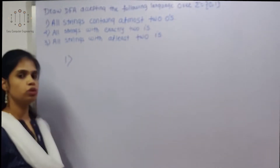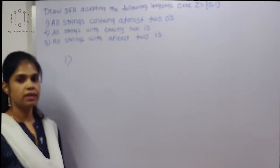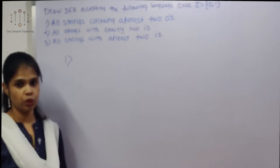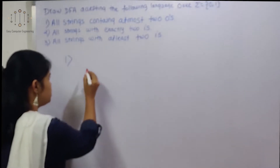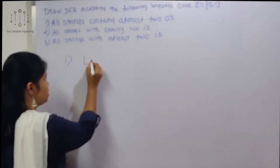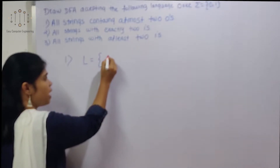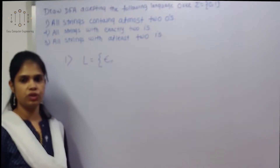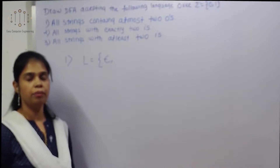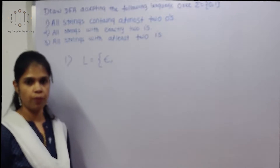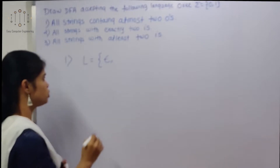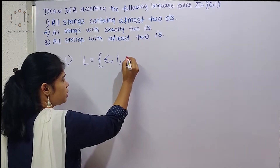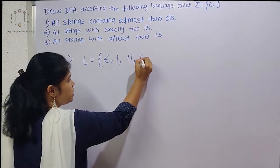At most two zeros means it is not necessary that the string will have any 0. This language will include epsilon as well. There is no restriction on 1, but the restriction is on 0 — at most two zeros. So only 1s are also possible, strings like '1', '11' are valid.